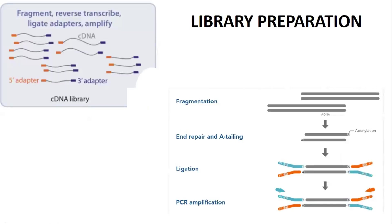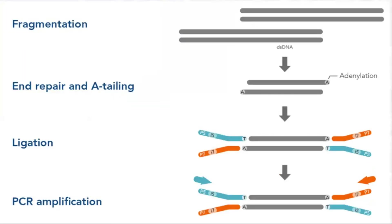After enrichment you have purified messenger RNA. Next is library preparation, which consists of fragmentation, end repair, A-tailing, ligation, and PCR amplification. Before sequencing, the messenger RNA must be converted into complementary DNA using reverse transcriptase enzyme. The complementary DNA is then used as a reference to construct new sequencing strands against it.